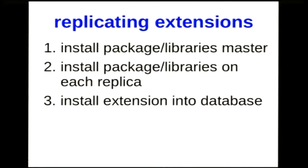Postgres supports a robust extension system including things like PostGIS and the ISBN data type. The replication stream does not include the libraries those extensions rely on. The way to install an extension when Postgres is being replicated is: install the libraries and SO files on each server using your installation management system, then install the extension into the database on the master. You need to make sure the libraries are installed on the replica because if the replica doesn't have those libraries, the first time it encounters use of the extension it will stop replication.